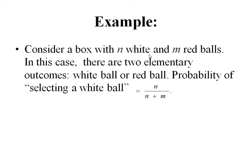The total is given by n white plus m red balls. Therefore, the probability of selecting a white ball is given as n divided by n plus m.